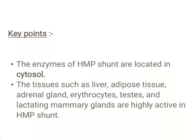Let us have a look at the key points of HMP shunt. The enzymes of HMP shunt are located in the cytosol. The tissues such as liver, adipose tissue, adrenal gland, erythrocytes, testes, and lactating mammary glands are highly active in HMP shunt.